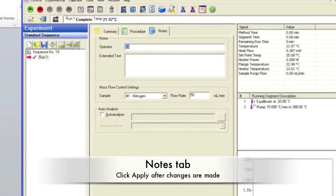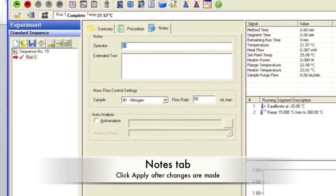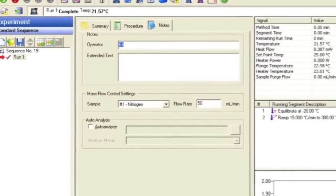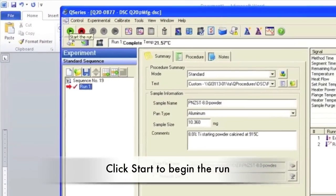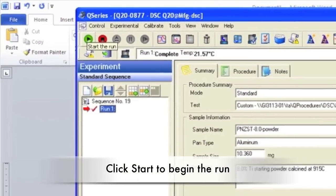Enter your name and any additional notes about the run under the Notes tab. After all your changes are made, click Apply at the bottom of the page. After all your information is set, press the Start button in the upper left corner.